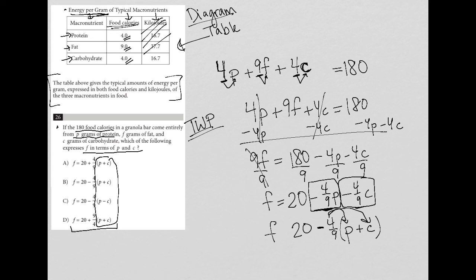So here's my answer. F is equal to, and I'll just write it here very neatly. F is equal to 20 minus 4 ninths (P plus C). And therefore, the correct answer is choice B. There it is. Choice B is the right answer here.